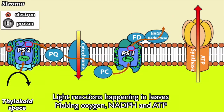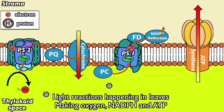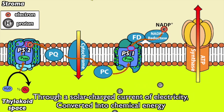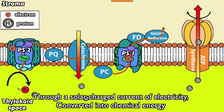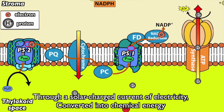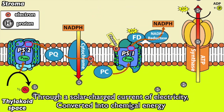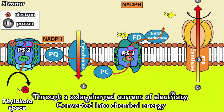Light reactions happening in leaves, making oxygen, NADPH and ATP. Through a solar charge current, the electricity converted into chemical energy.